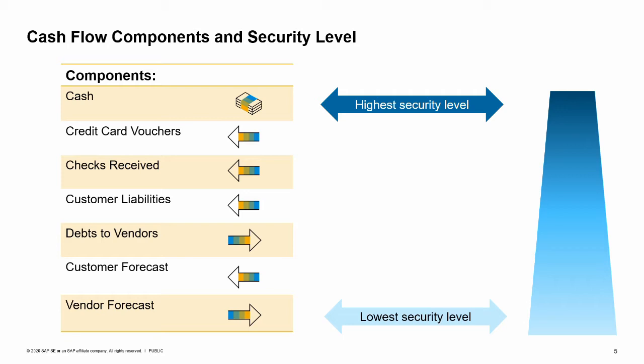Then the credit card vouchers and checks received. The next level is customer liabilities, e.g. AR invoices, and debts to vendor, e.g. AP invoices. The lowest security level is the customer and vendor forecast. The customer and vendor forecasts represent the open documents, such as sales and purchasing orders and draft documents.